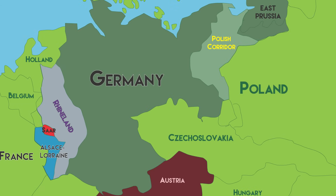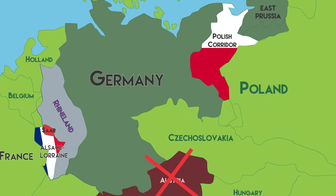Alsace-Lorraine was returned to France. Germany was forbidden to unite with Austria. Lands in East Germany, including the farmlands of Posen and the Polish corridor between East Germany and East Prussia, were given to Poland.